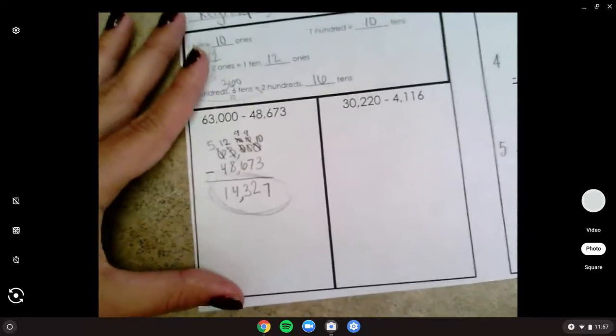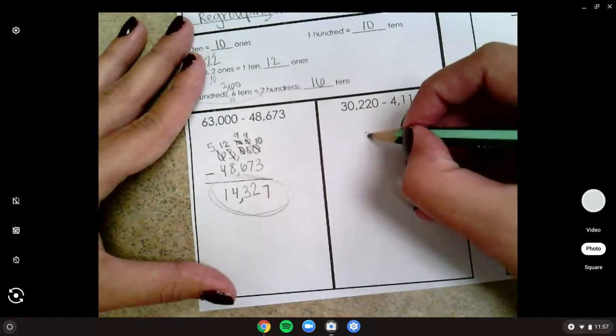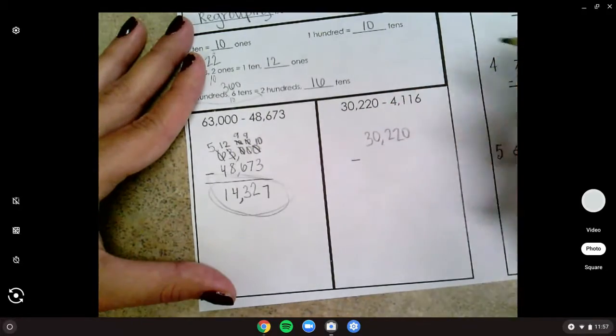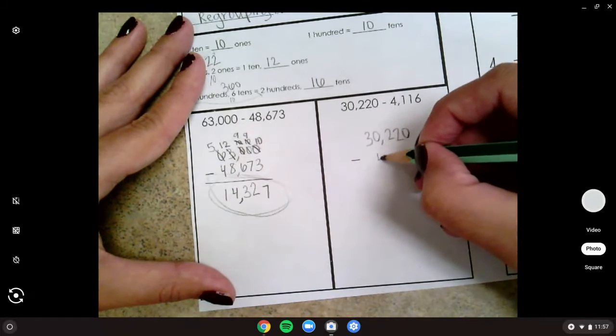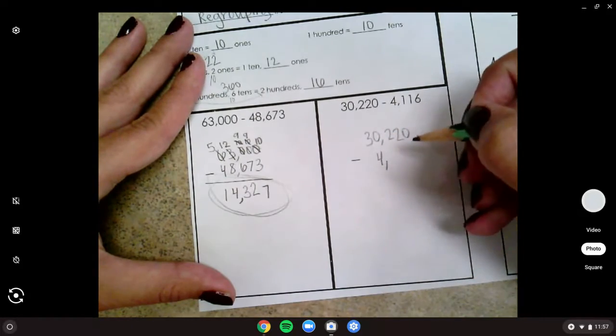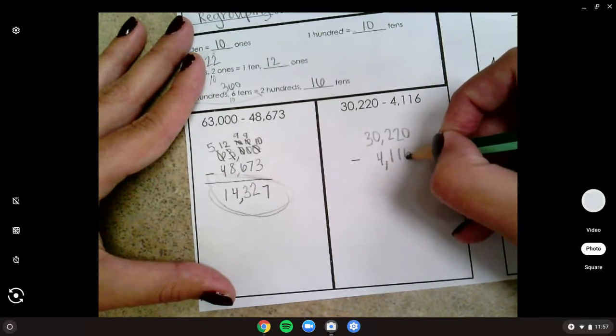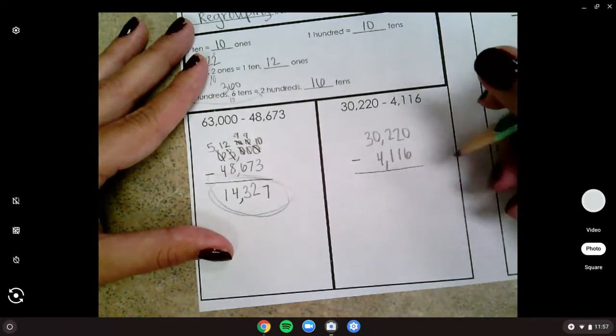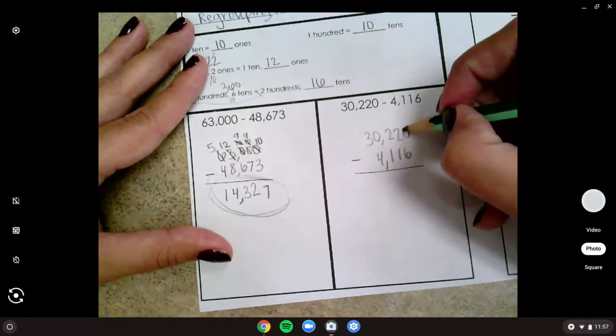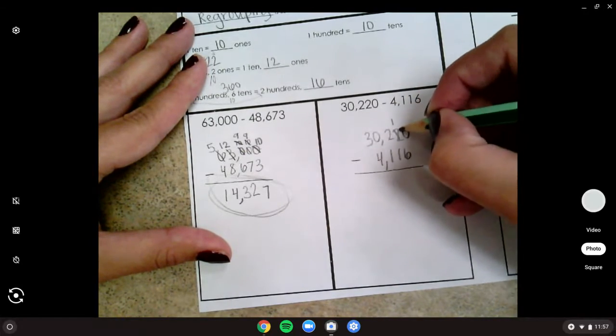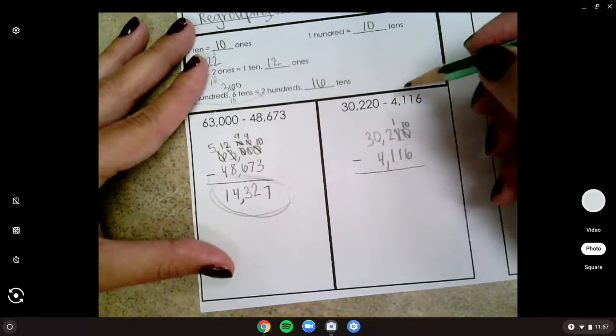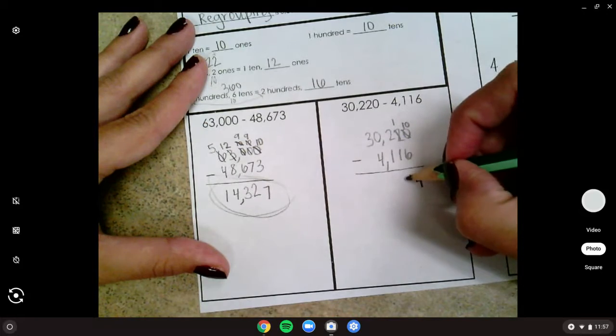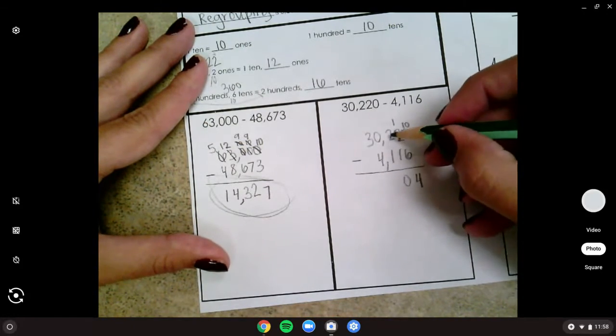Let's do one more practice problem together. Let's set up our problem first with 30,220 minus—I'm going to try it this way this time. I'm lining up my thousands, four, and my comma, one, one, six.